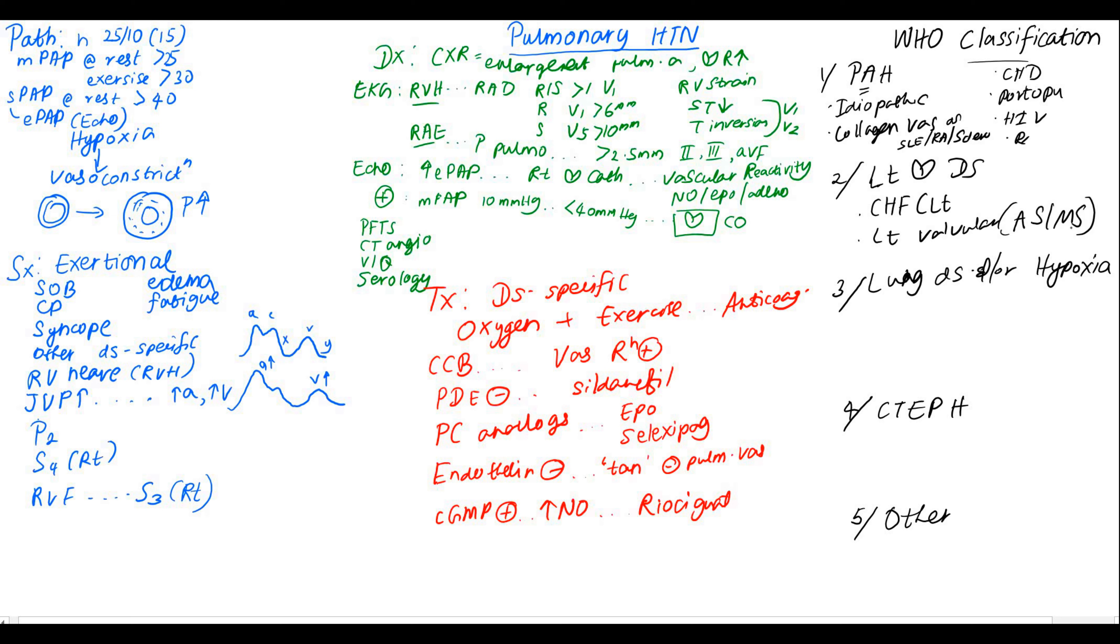Lung diseases of obstructive or restrictive pathologies can lead to pulmonary hypertension. Hypoxia can be caused due to high altitude, obstructive sleep apnea, or even obesity.